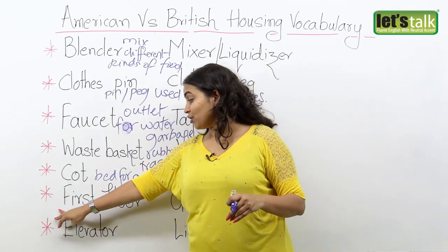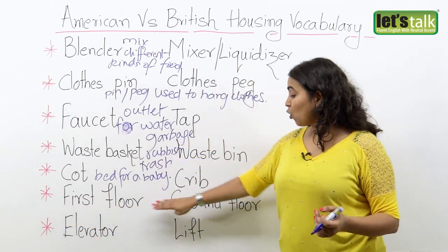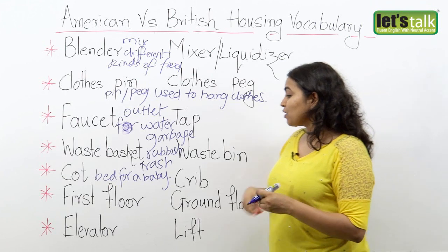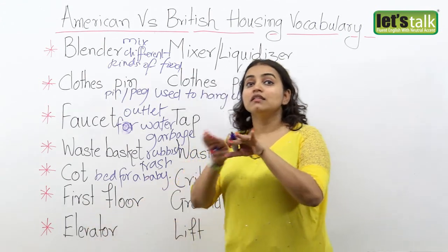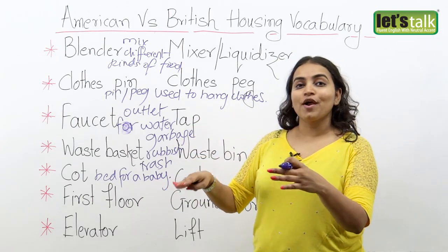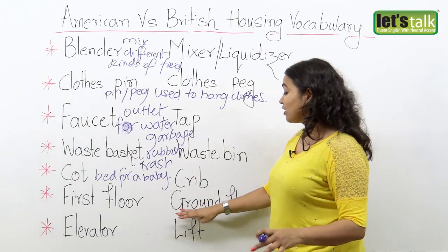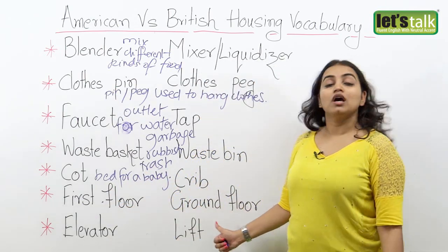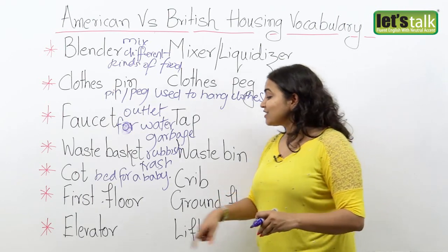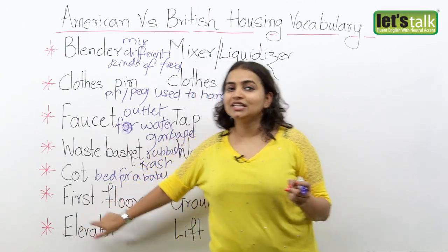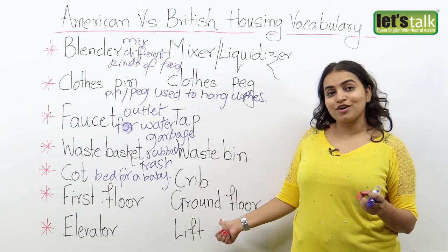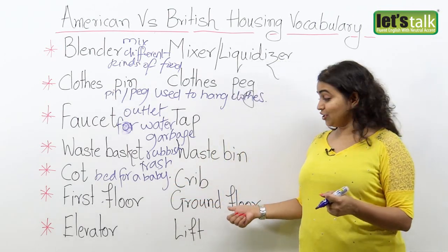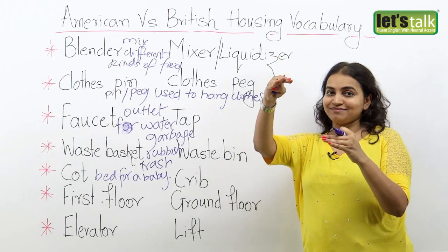Our next expression is the first floor versus the ground floor. When you are living in a building you have several levels. The first floor in America is basically the ground level — the first level where the first bunch of flats are. But in the UK that same level is called the ground floor. The funny thing is that in the UK, the first floor is actually the floor above the ground floor. So when living on the first floor in America or the ground floor in the UK, you don't need to use the stairs.